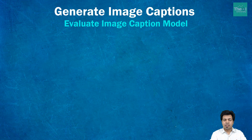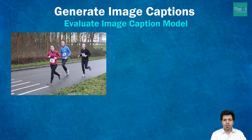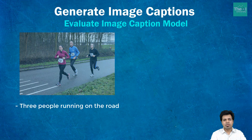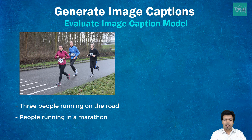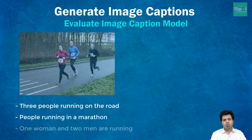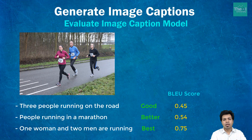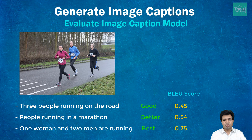If I take an example of this particular image on the screen, there can be multiple captions associated with it. Some might say 'three people are running on the road,' someone might say 'people running in a marathon,' and others might say 'one woman and two men are running.' All of these captions are appropriate to describe this picture. BLEU score helps in measuring how good a particular machine-generated caption is by automatically computing a score. If a machine-generated caption is close to a reference or actual caption, then the BLEU score will be high or close to one. If there is a complete mismatch, then the score would be close to zero.